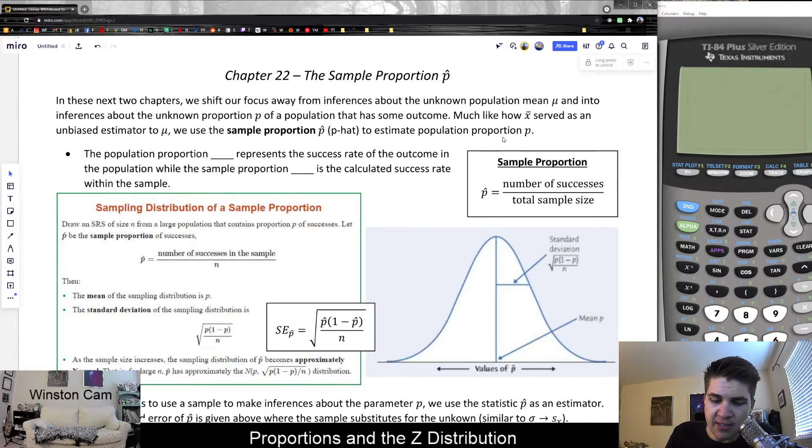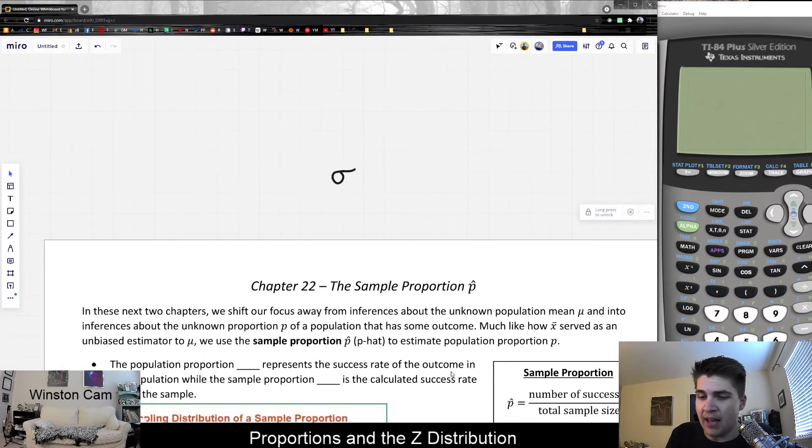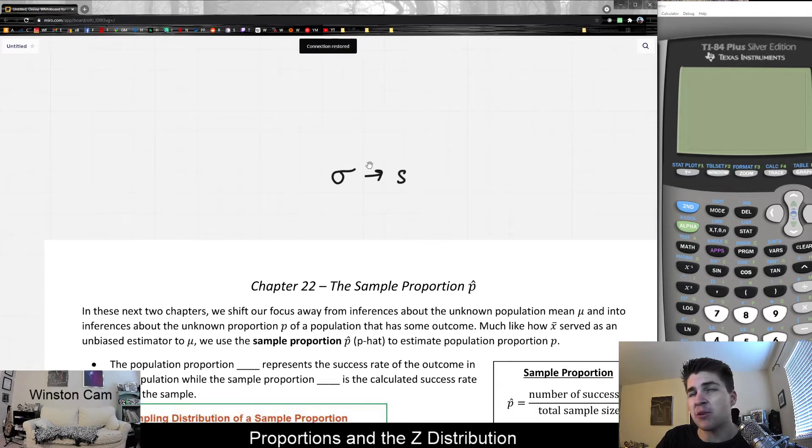In our statistical variables so far, sigma stands for standard deviation. When we're talking about a sample, we use s instead. But they're both the same idea. One is the theoretical perfect standard deviation for everyone. Our goal in statistics is to measure a sample and make inferences about the original.